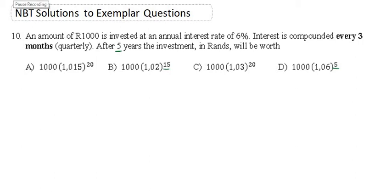Hey guys, we're on to the last question of the NBT Example Questions. Question 10 says: An amount of R1000 is invested at an annual interest rate of 6%, interest is compounded quarterly (every 3 months), and after 5 years the investment in Rands will be worth how much?